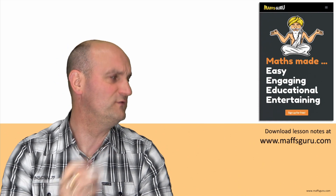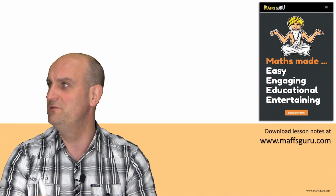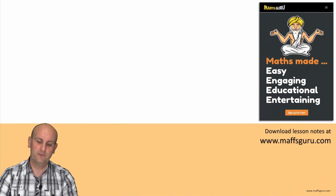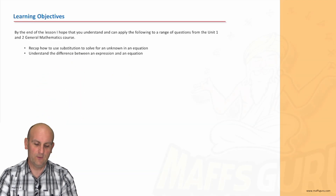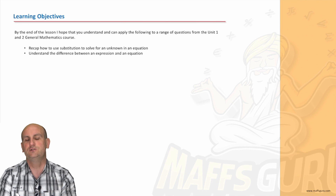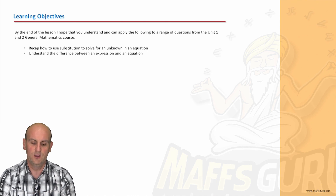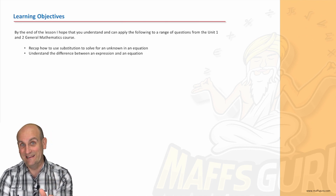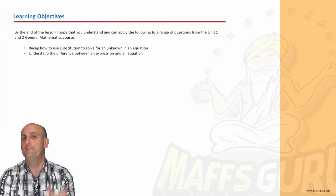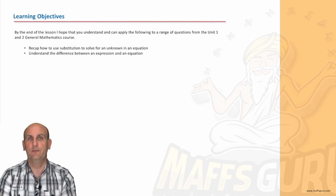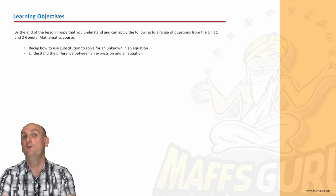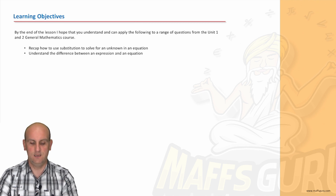Tell your mates as well if you would — just turn to your mate now and go, 'I've just found this guy, he's MathsGuru, he seems pretty good.' Hopefully I'm good. So what are we dealing with today? We're going to recap how to use substitution to solve for an unknown in an equation. You have been doing this for years, but I'm just going to recap. These first eight or nine videos aren't particularly long because a lot of this we're building on what you already know.